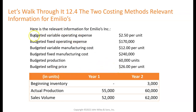That first item is budgeted variable operating expense. On an absorption costing statement, this is going to be below gross margin. On a contribution margin — a variable costing format — that's going to be above the contribution margin because it's variable.